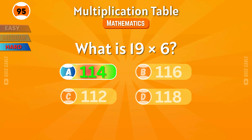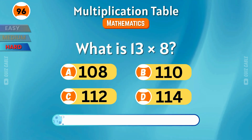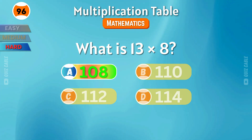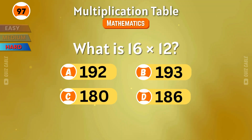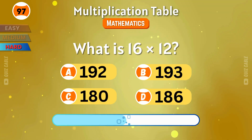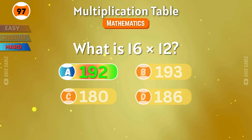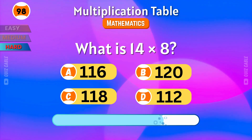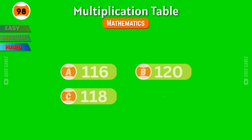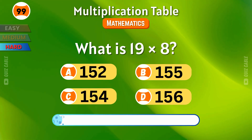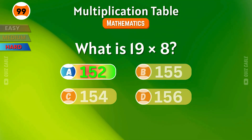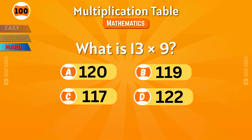Yes — 114. What is 13 times 8? That's 121. What is 14 times 8? That makes 112. What is 19 times 8? The result is 152. What is 13 times 9? That's 117.